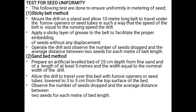Sandband method: Prepare an artificial leveled bed of 25 cm depth from fine sand, of a length of at least 5 meters and width equal to the nominal width of the drill. Allow the drill to travel over this bed with furrow openers or seed tubes lowered to 3–5 cm from the top surface of the bed. Observe the number of seeds dropped and the average distance between two seeds for each meter of bed length.